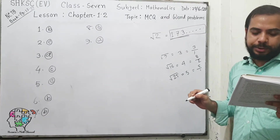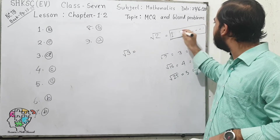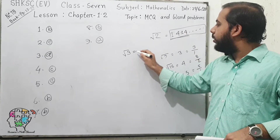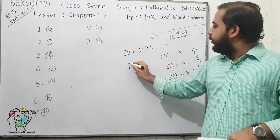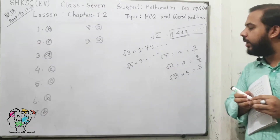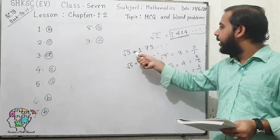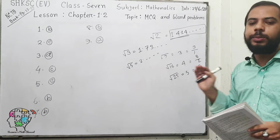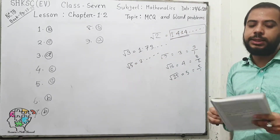Other examples of irrational numbers are root over 3, which is approximately 1.73, and root over 5, which is 2 point something. These decimal digits are unlimited and cannot be written in any rational number format. So these are called irrational numbers.